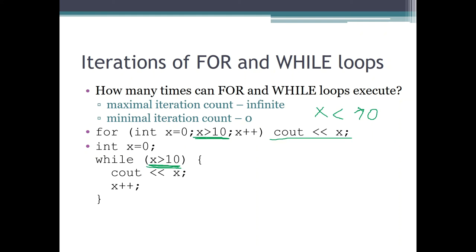This example shows that it can occur that a loop executes zero times. It is not anything special — it is perfectly normal for both for and while loops.